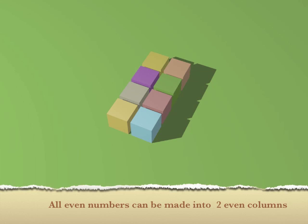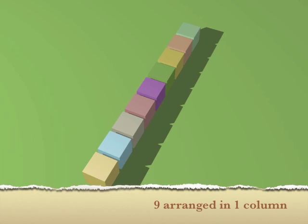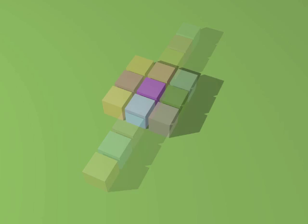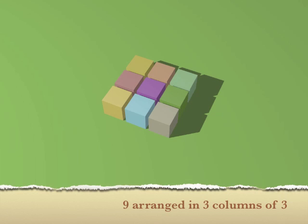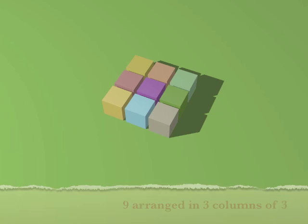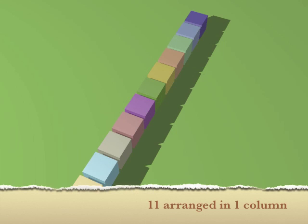Even numbers will have more rectangular arrangements — a minimum of three, and likely more. Now let's look at the number nine. Nine is not even, but we can form a single column, a single row, or arrange them in a three by three. So the number nine has three arrangements.